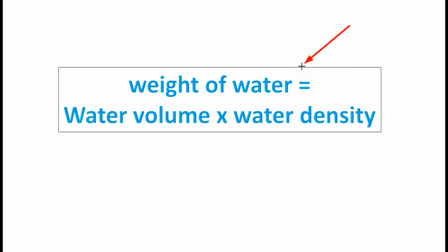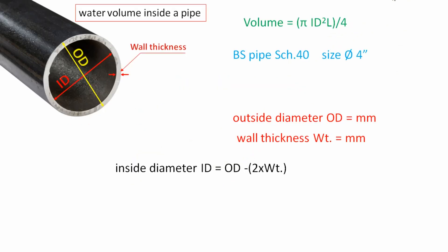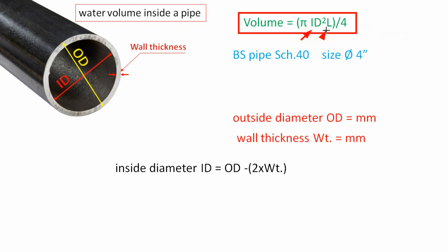To calculate the weight of water, first we calculate the volume of water inside the pipe, then we multiply it by water density. To calculate the volume of water, we use this formula: volume equal to pi into inside diameter squared into pipe length, divided by 4.